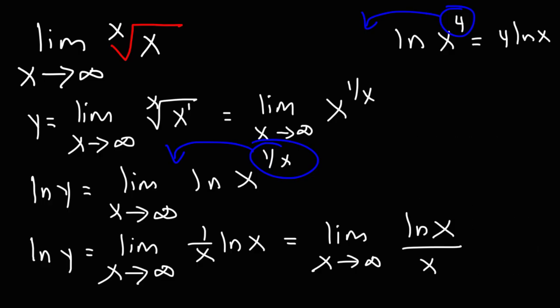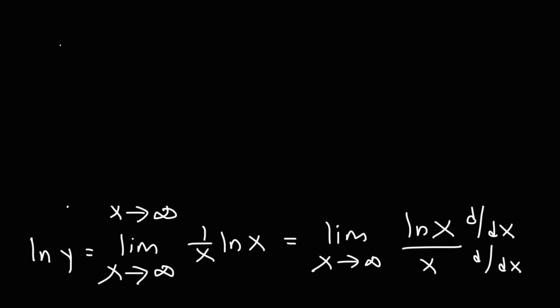And, in order to use L'Hopital's rule, we need to take the derivative of the top and the bottom part of the fraction. So, we have ln y is equal to the limit as x goes to infinity, and the derivative of ln x is 1 over x, the derivative of x is 1, 1 over x divided by 1 is just 1 over x.